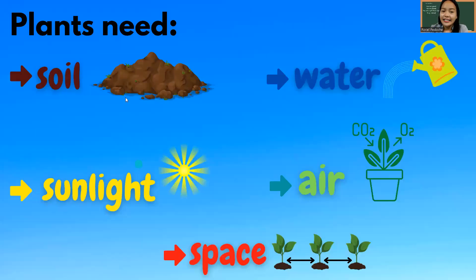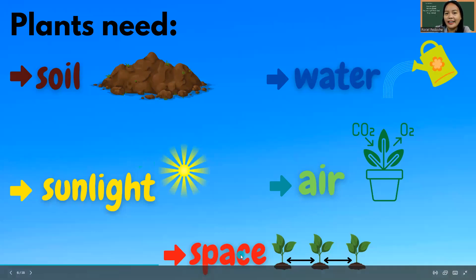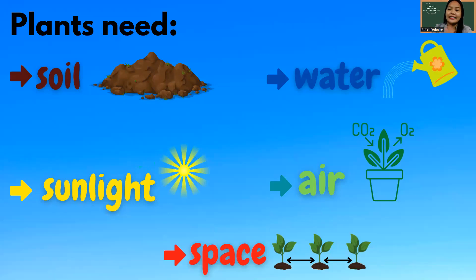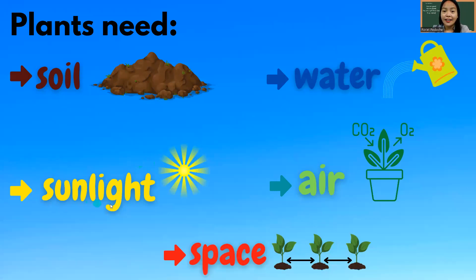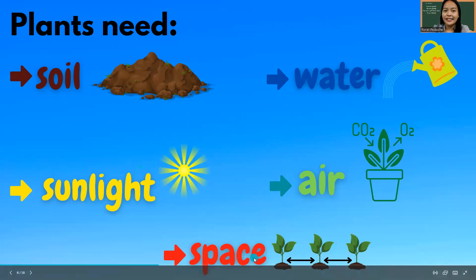Plants need soil, water, sunlight, air, and space. These are the five needs of plants. Let's talk more about this and go through them one by one.